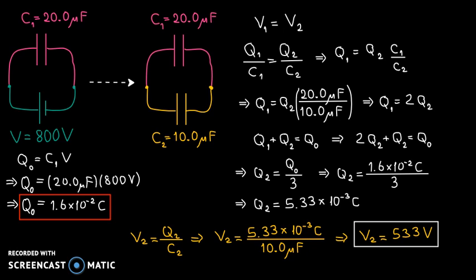We find V2 by dividing Q2 by C2, and we get 533 volts. You can alternatively calculate Q1 and divide by C1, and you should get the same answer because V1 and V2 are equal.